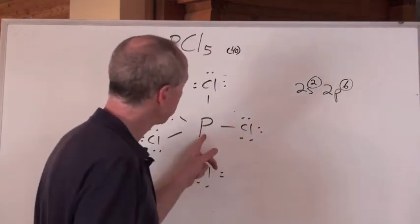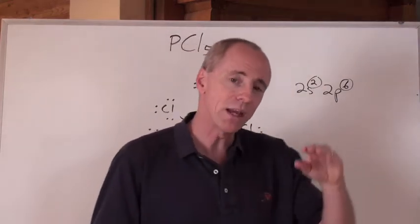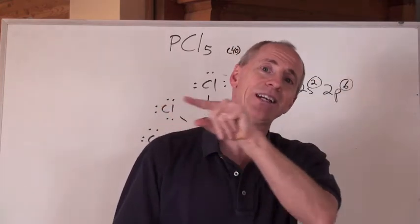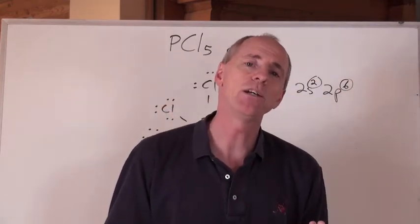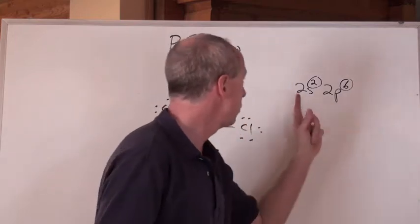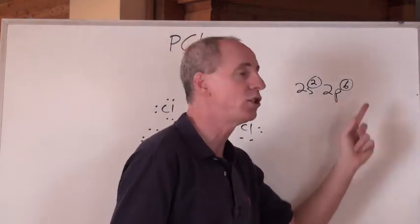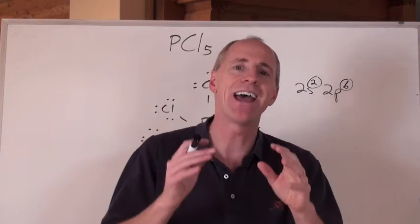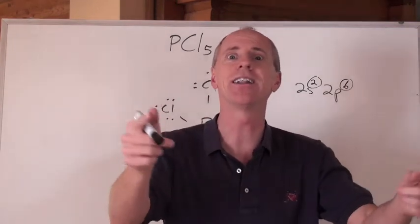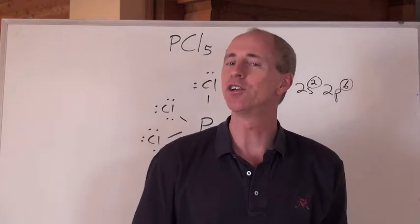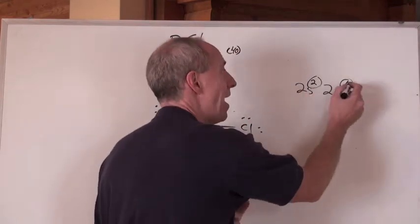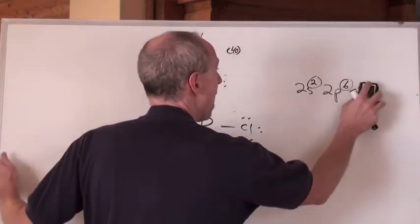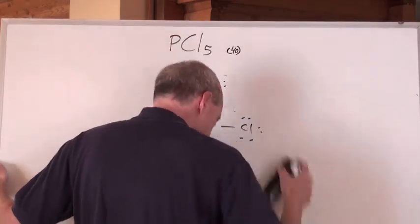Hey, guess what? Phosphorus is underneath nitrogen at n equals 3. And at n equals 3, not only do you have s and p orbitals, but you can also have d orbitals as valence orbitals, as extra places to put electrons. So you're not limited by 8. You can go up past it. And so guess what? So we do.